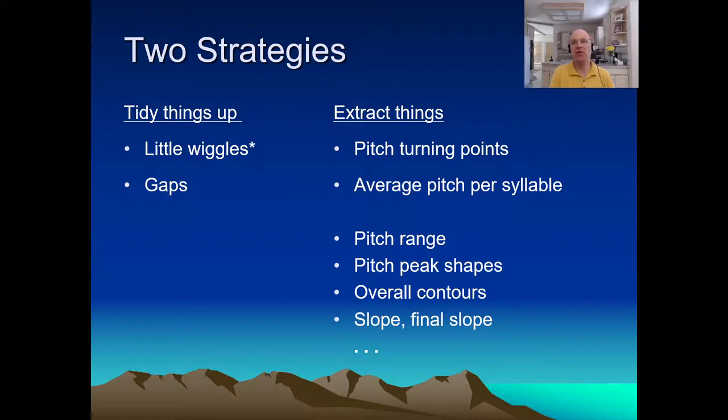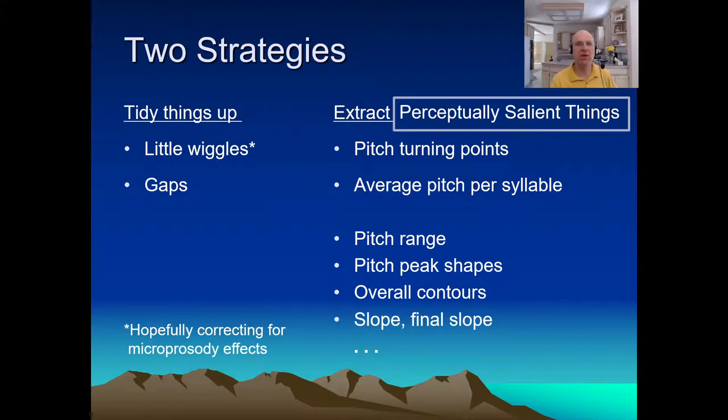Alright, so in summary, we've seen two strategies for abstraction. Two ways to deal with the overwhelming complexity of pitch tracks. First, we can tidy things up. Ideally, our tools would detect microprosodic effects and correct for them. In practice, they mostly just smooth and interpolate. It's not risk-free, but still on the conservative side. And it doesn't really make any assumptions about what language you're dealing with. The other strategy is more radical. So, the idea is to extract what matters, either in being perceptually salient or important in some other way.